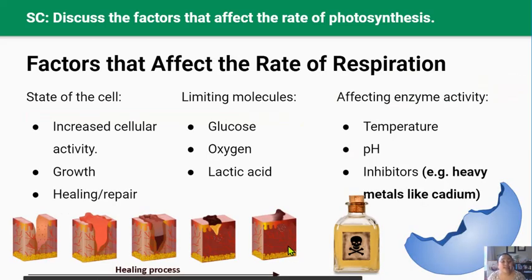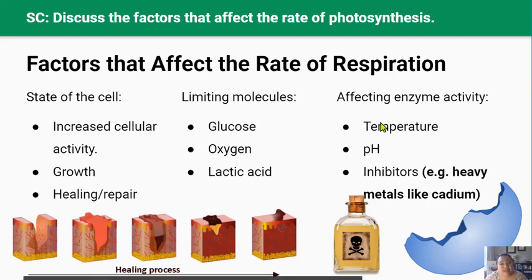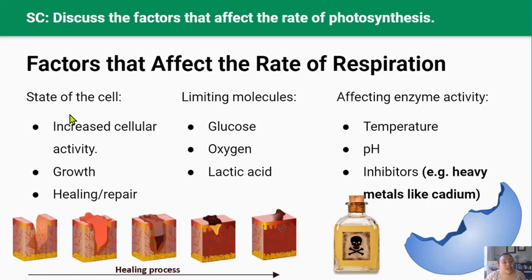The factors that affect the rate of cellular respiration fall into three categories: the state of the cell, limiting molecules, and factors that affect enzyme activity. Cells that are highly active have a high rate of cellular respiration — whenever the rate of chemical reactions in the cell increases, respiration also increases to produce more ATP. For example, liver cells break down and remove toxic substances from the blood, requiring ATP. When people consume alcohol, their liver works extra hard to break down alcoholic molecules, increasing cellular respiration and the need for more ATP.